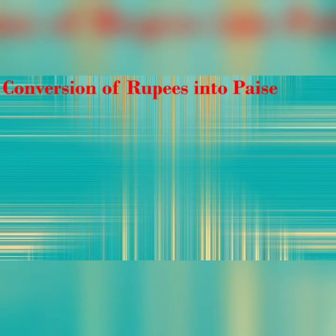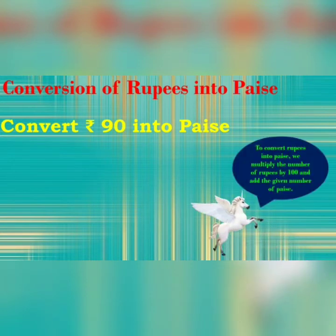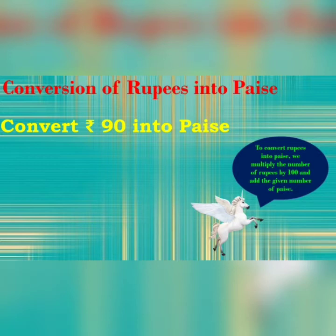Conversion of Rupees into Paise. Always remember, to convert Rupees into Paise, we multiply the number of Rupees by 100 and add the given number of Paise.